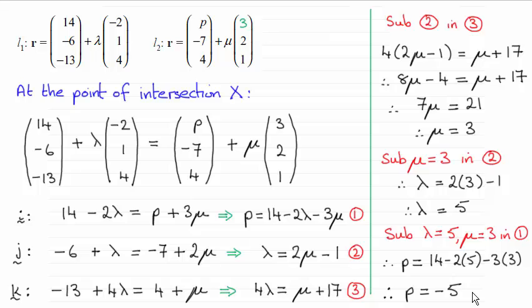Well it turns out that P equals minus 5 and the method we use is a fairly standard method. When you're looking for where two lines intersect, their position vectors R would be exactly the same for some value of lambda and for some value of mu.